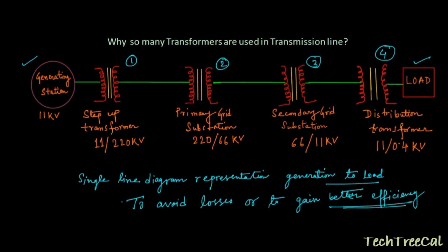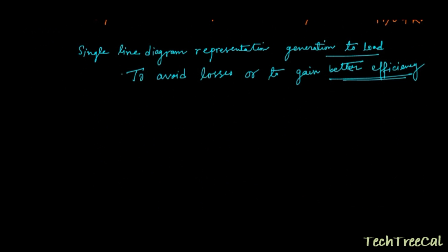Now what kind of loss is involved in transmission lines? A major loss in this transmission line is called copper loss, and the expression of this copper loss is I²R, where I is your current flowing through this transmission line and R is your resistance of the line.